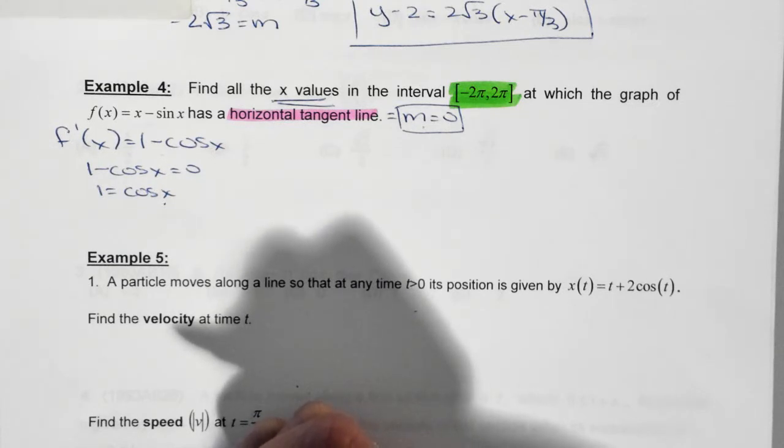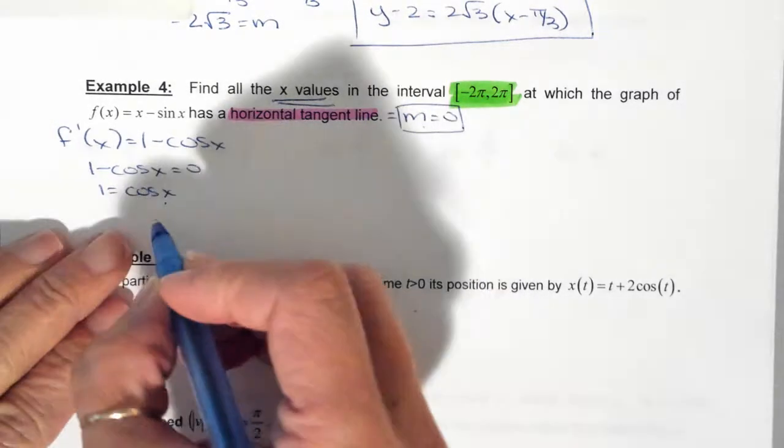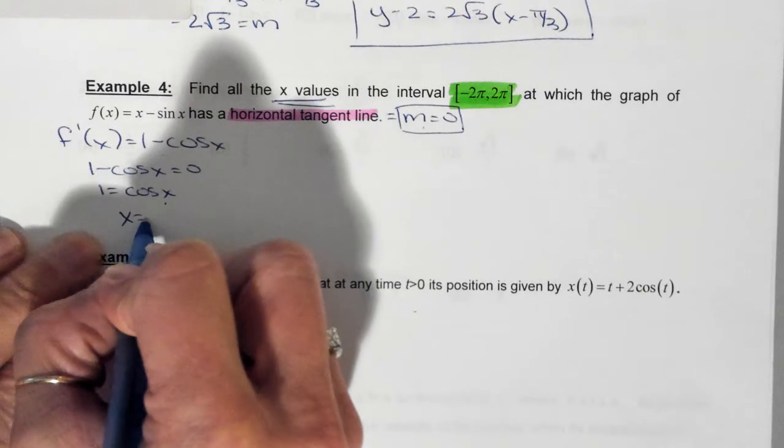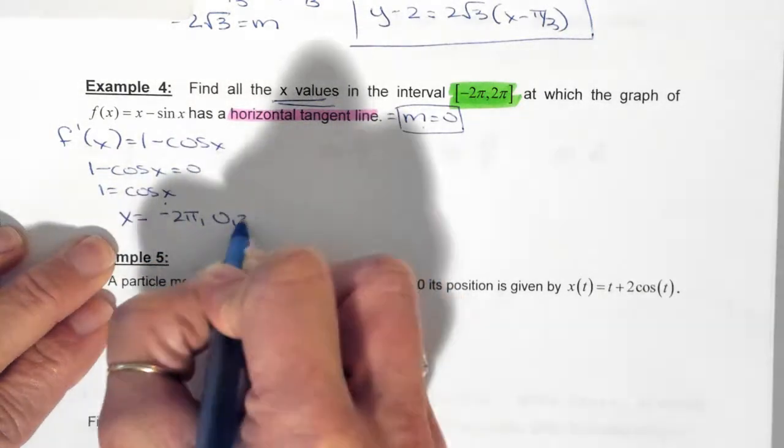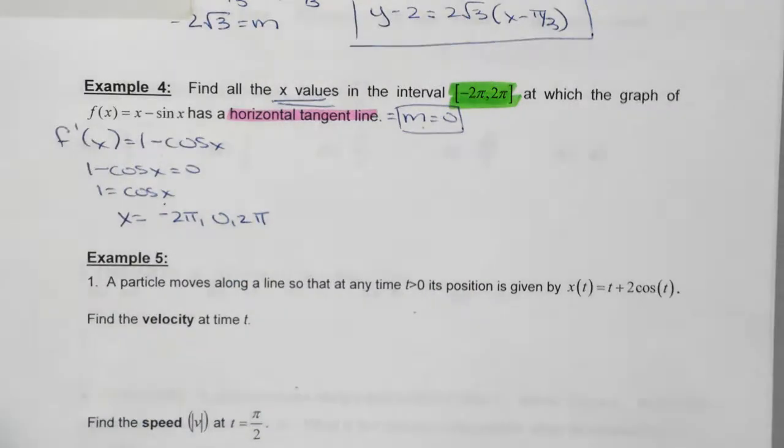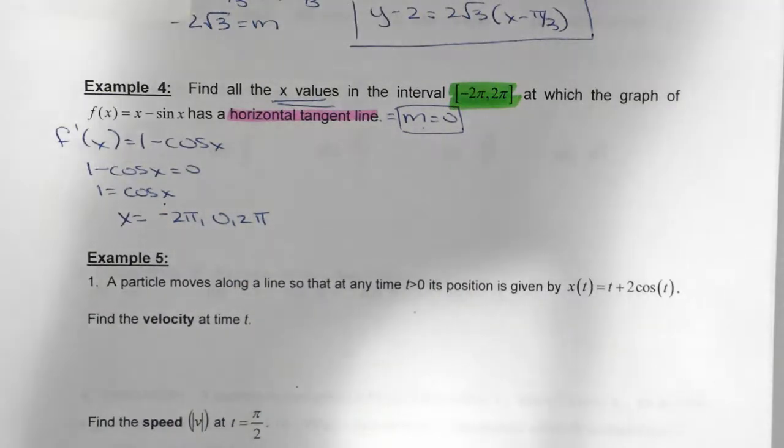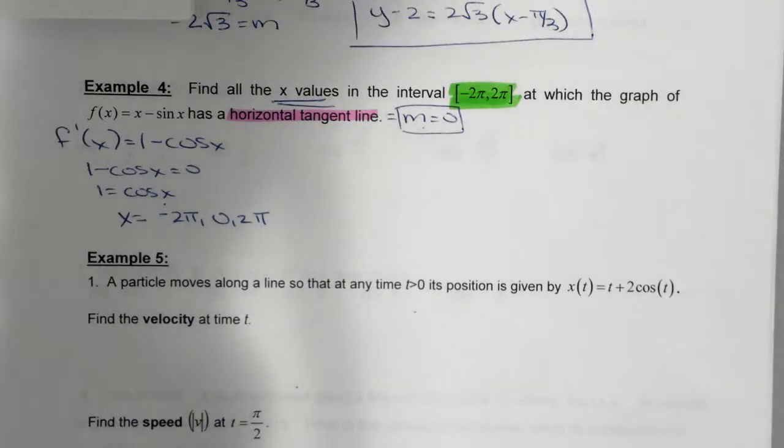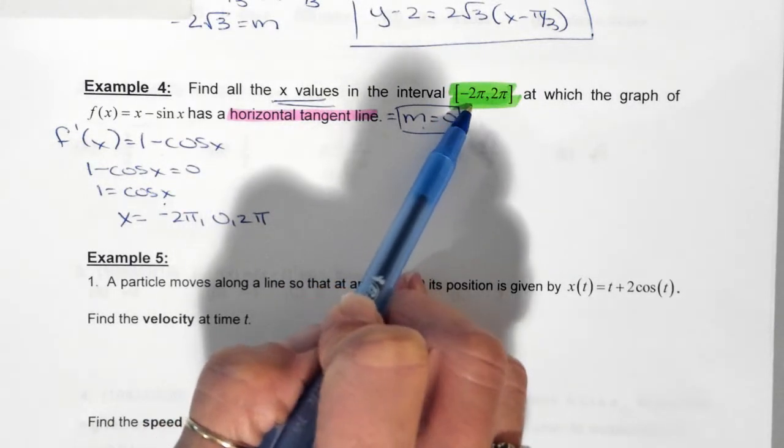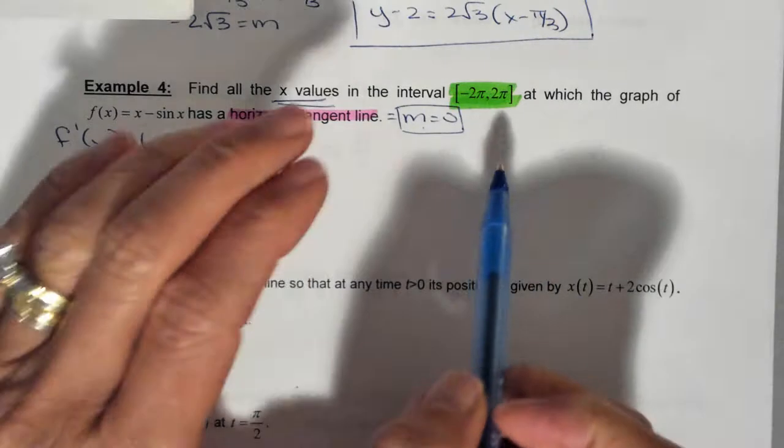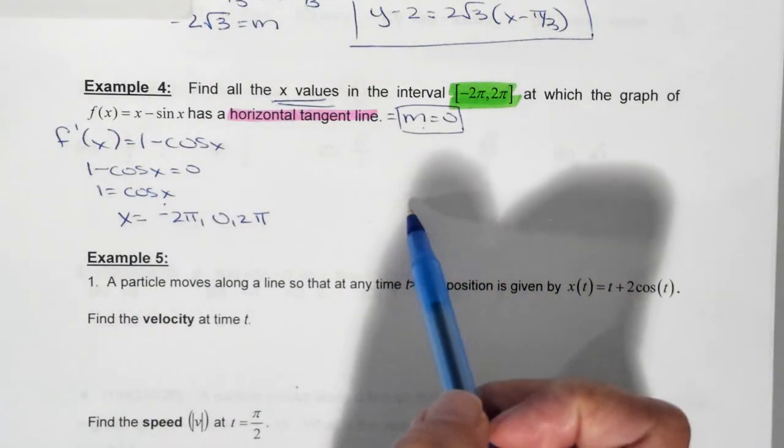Do you see how that works? So what we're saying here is x is equal to negative two pi, zero, and two pi. Now, why did I have to include all those when they're in the exact same spot? To be specific. Look here. All values. But why all values? What notation is telling me all? The bracket.